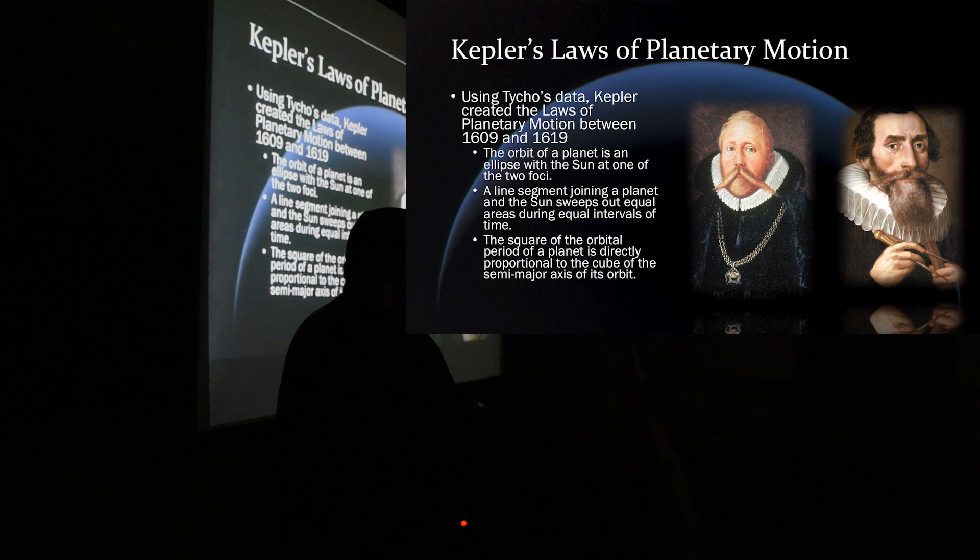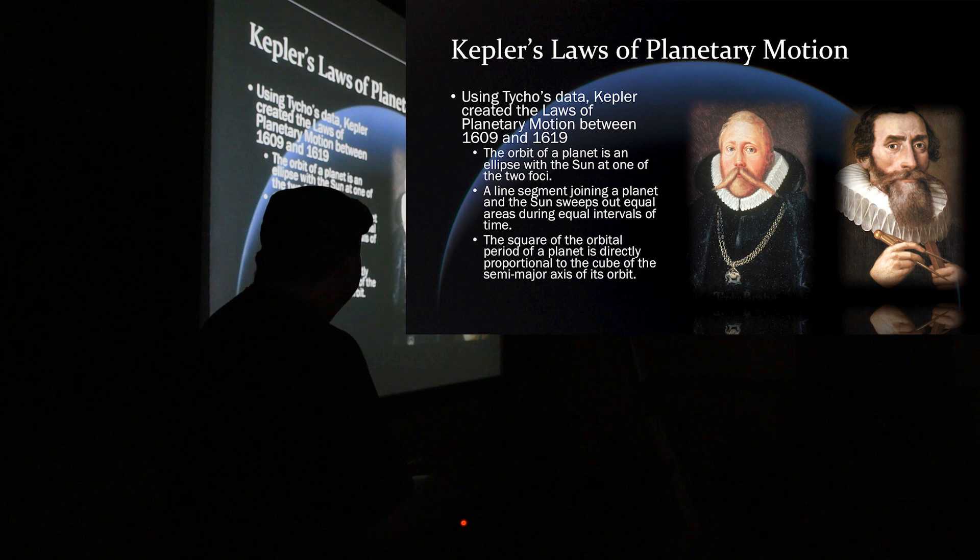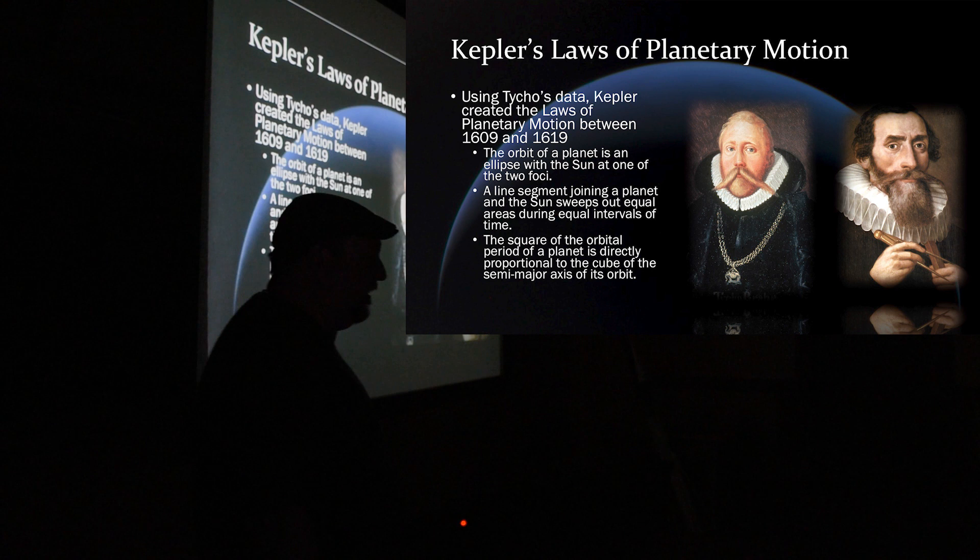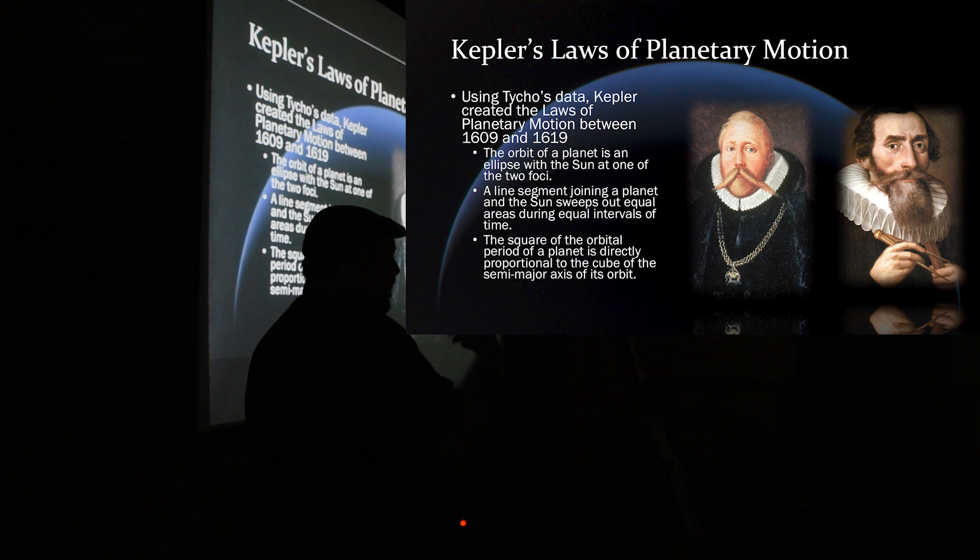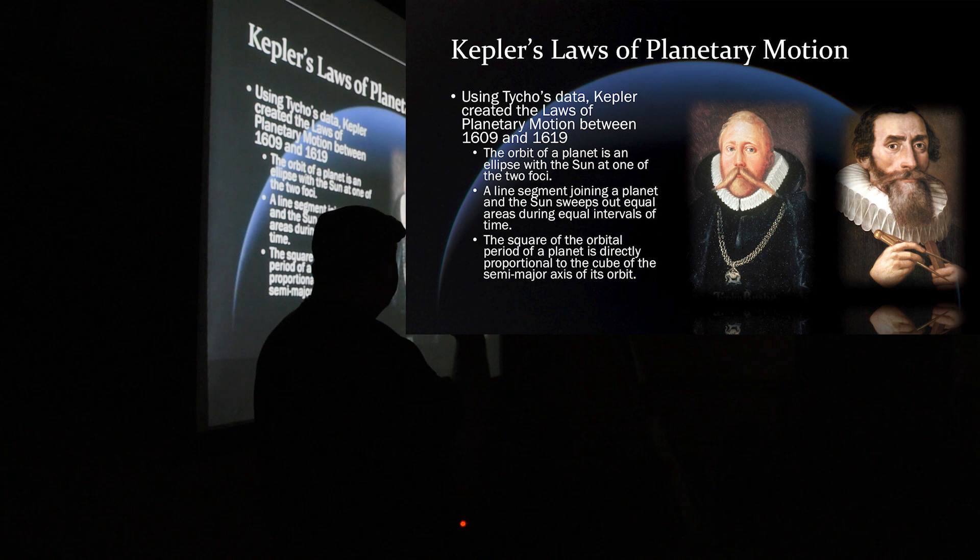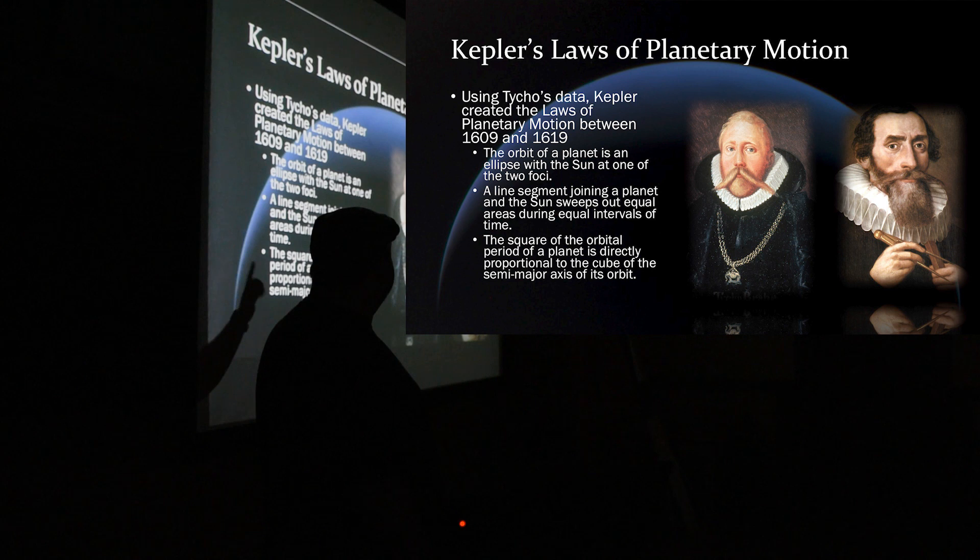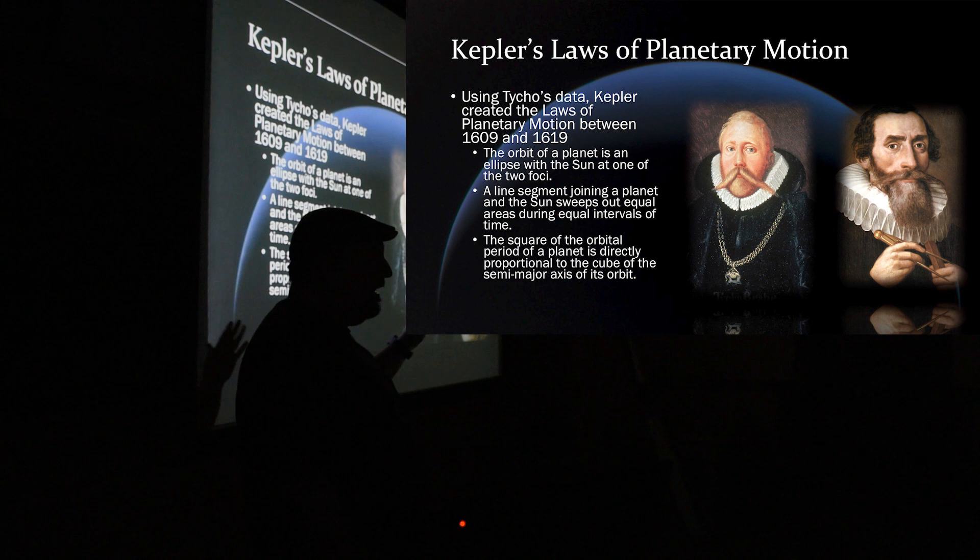Then comes my main hero. I didn't like Tycho too much. He's kind of an arrogant guy. He liked to party a lot. There's a lot of stories about his parties. So between 1609 and 1619, Kepler started using Tycho's data. Tycho was a – he wasn't a good theoretical scientist. He was more of an observational scientist. He took very good notes of positions of the planets. Now, this is before the invention of the telescope. Tycho's data was before the invention of the telescope. So using Tycho's data, Kepler was able to come up with his planetary – or his laws of planetary motion.